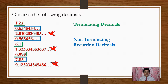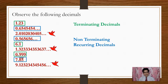There is a third type of decimal. For example: 2.010203 and so on, 1.323334 and 35 and so on, and 9.123234454345 and so on. There are so many other types of decimals like these.